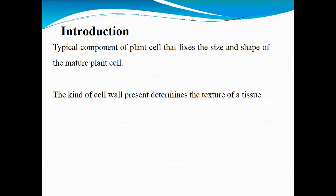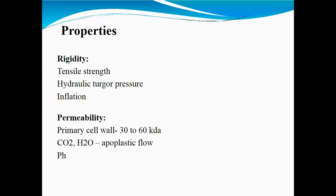The kind of cell wall present determines the texture of a specific cell. The basic properties a cell wall has are inflation, hydraulic pressure, and tensile strength, which give rigidity to the cell wall and hold the cell and its contents. The cell wall and cell membrane have permeability, meaning some ions, drugs, or molecules can move from outside the cell membrane or cell wall to inside, or from inside to outside. The primary cell wall is about 30 to 60 kilodaltons and has a specific pH.